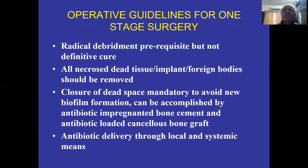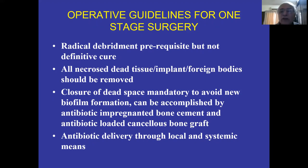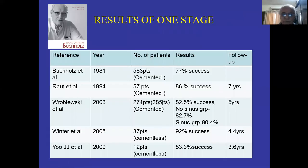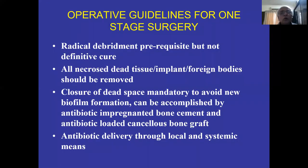Operative guidelines for single stage: radical debridement is a prerequisite, not a definitive cure. Debride, wash out, see the tissue, debride again — two to three times. All necrotic dead tissue, implant, and foreign body should be removed. Closure of dead space is mandatory to avoid new biofilm — you need to completely cover the implant. This can be accomplished by antibiotic-impregnated bone cement or antibiotic-loaded cancellous bone graft. Antibiotic delivery through both local and systemic means.